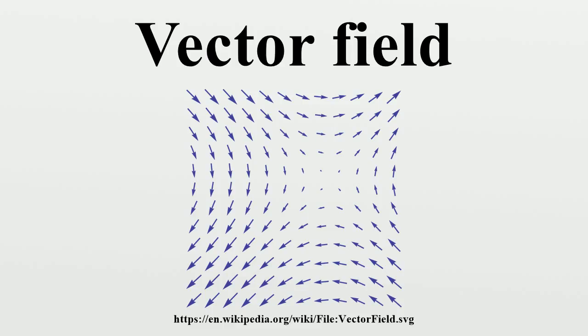A vector field can be visualized as assigning a vector to individual points within an n-dimensional space. Given two Ck vector fields V, W defined on S and a real-valued Ck function F defined on S, the two operations scalar multiplication and vector addition define the module of Ck vector fields over the ring of Ck functions.